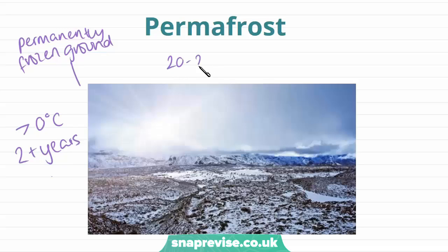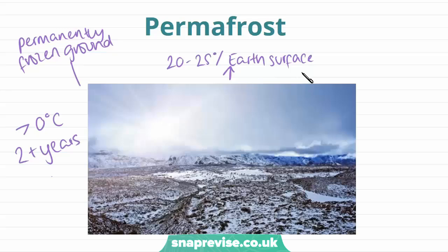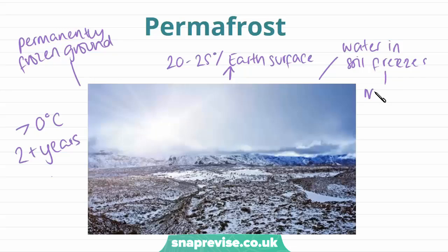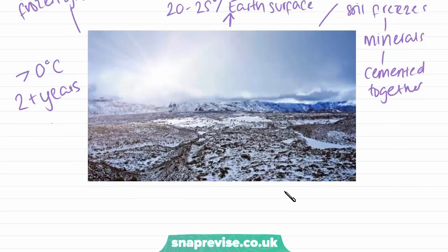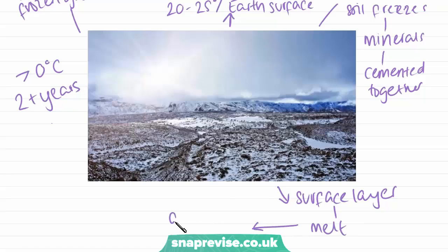Currently 20 to 25% of the earth's surface is permafrost, found in northern regions like northern Canada and Siberia. Permafrost is formed when water in the soil freezes and organic particles and minerals are cemented together. In the summer when temperatures rise, the top layer — called the surface layer — might melt a bit, and this is what we call the active layer.